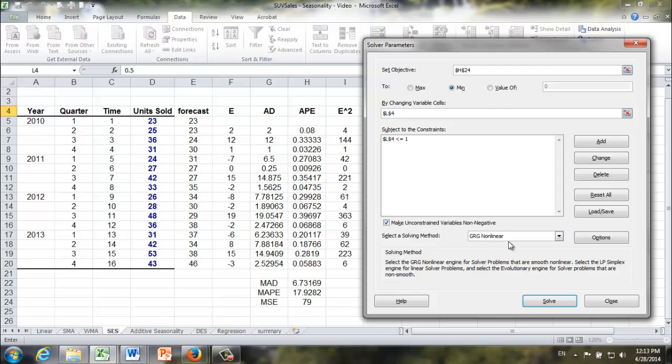Once again, we're going to choose GRG nonlinear method because MSE is mean squared errors. We have a squared term over here. So we have to use nonlinear method. That's it. Let's go ahead and solve it.